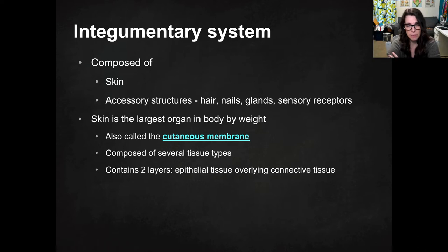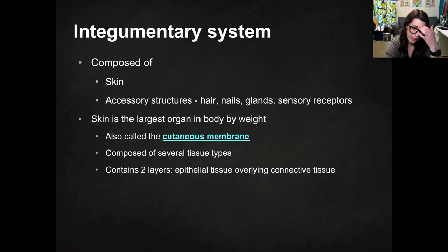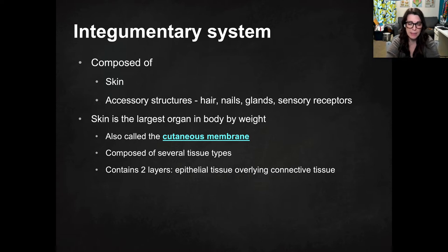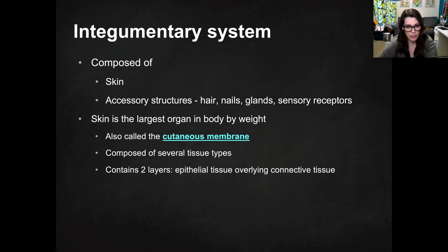The integumentary system is basically your skin, but it also includes your accessory structures — like your hair, your fingernails, and any glands and receptors that are located in the skin. Skin is the largest organ in your body by weight. It's also sometimes referred to as the cutaneous membrane in your textbook, so if you see cutaneous membrane, that just means skin. It's made of several different tissue types, but in general it contains two layers of epithelial tissue that overlay some connective tissue, and we're going to talk about those layers in separate videos.